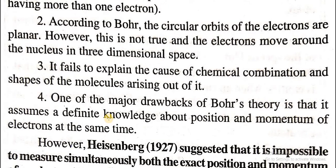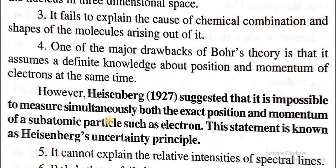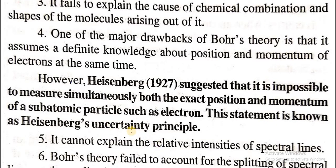Third, it fails to explain the cause of chemical combination and the shapes of molecules arising from it. Fourth, one of the major drawbacks of Bohr's theory is that it assumes definite knowledge of both the position and momentum of electrons at the same time. This is addressed by the Heisenberg uncertainty principle, which states that it is impossible to measure simultaneously both the exact position and momentum of a subatomic particle such as an electron.